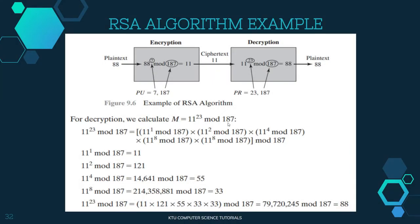Now we decrypt using 11 raised to 23 mod 187. We break 23 into smaller powers: 11 raised to 1, 11 raised to 2, 11 raised to 4, 11 raised to 8, and 11 raised to 16, since 1 plus 2 plus 4 plus 8 plus 8 equals 23. That is 1 plus 2 is 3, 3 plus 4 is 7, 7 plus 8 is 15, 15 plus 8 is 23.